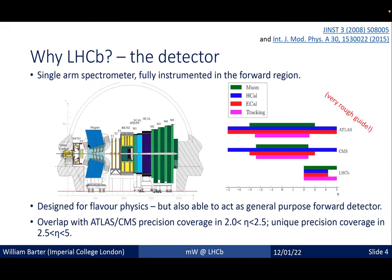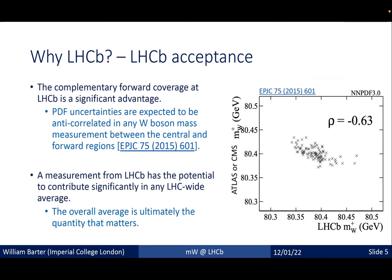Why LHCb? Our detector is a single-arm spectrometer instrumented in the forward region. The proton-proton collisions take place inside the interaction region, and we instrument around the beam line. While LHCb is designed for flavor physics, excellent detector performance means we can also act as a general purpose forward detector. We have unique precision coverage in the furthest forward region, which is important when measuring the W boson mass.